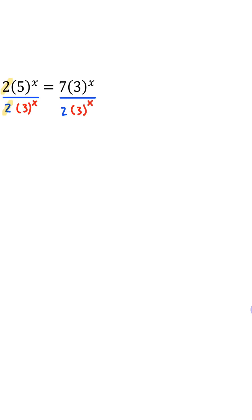We're going to divide both sides by 3 to the power of x, the 3 to the power of x will cancel. Simplify this, we get 5 to the power of x over 3 to the power of x equals 7 halves.